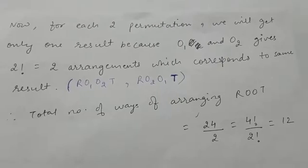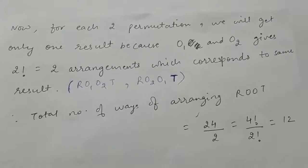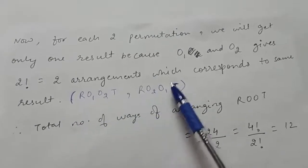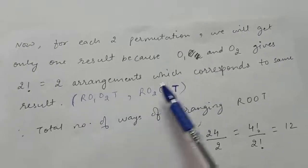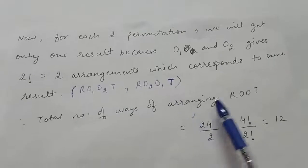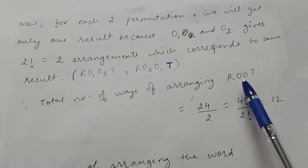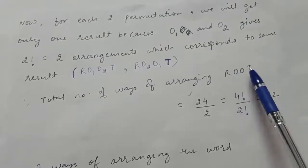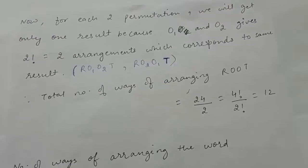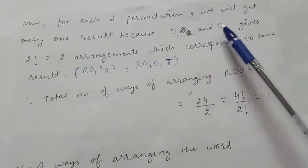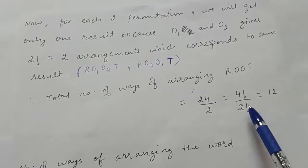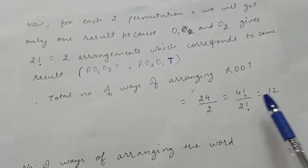For every two permutations we get only one result, because O1 and O2 can be arranged in 2! = 2 ways which correspond to the same arrangement. Therefore the total number of ways to arrange the word ROOT is 4! divided by 2!, because O repeats twice. That gives 24 / 2 = 12 arrangements.